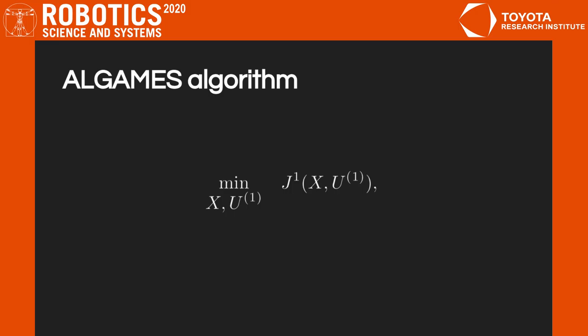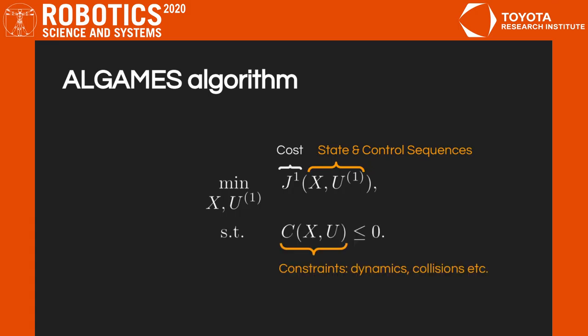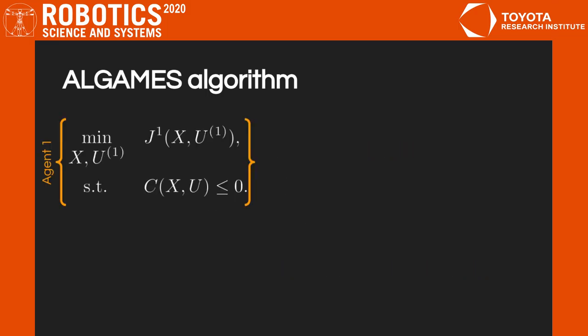Agent 1 tries to minimize its cost, J1, by choosing an appropriate sequence of controls, U1. For instance, this cost function could encode a desired speed or a desired lane in the autonomous driving context. The agent also has to respect constraints, like collision avoidance. The same is true for agent 2.